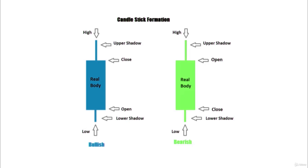There are basically two types of candlesticks: green and red colored candlesticks. A green candlestick indicates the opening price of the session being below the closing price. And a red candlestick shows the opening price of the session being above the closing price.